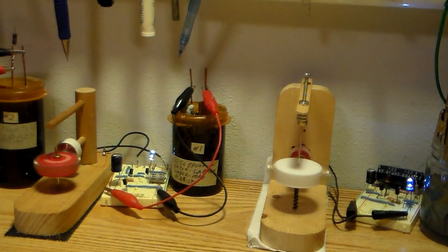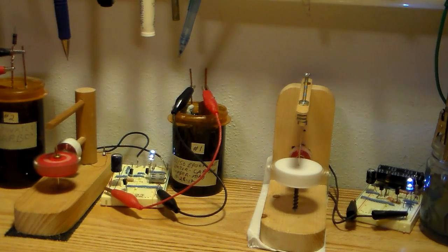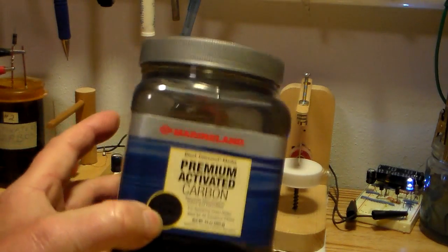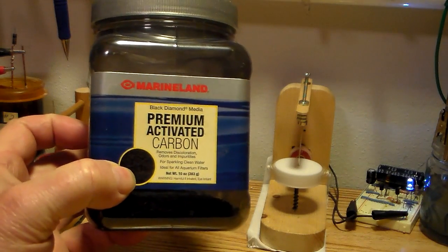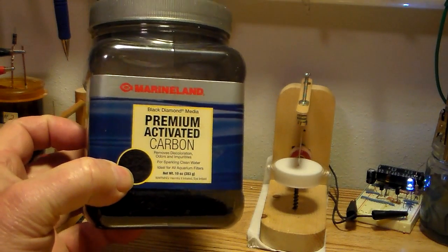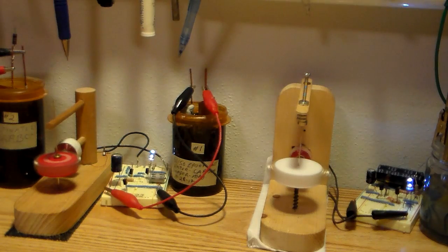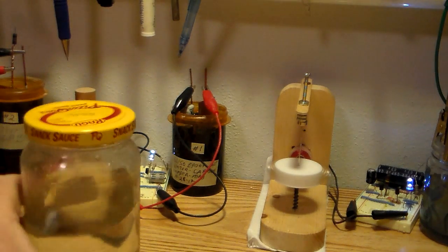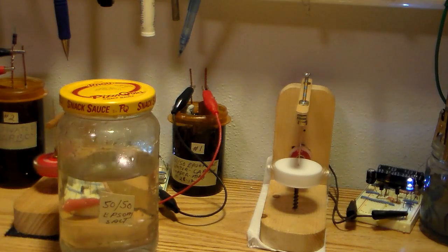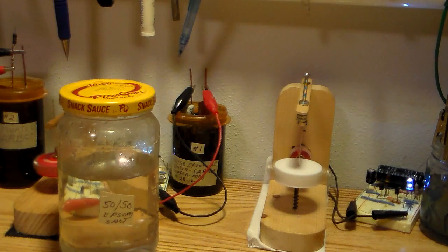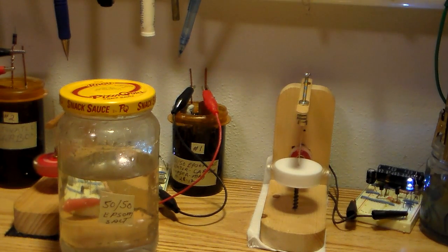Anyway, all it consists of—I stuck them in there and the first thing I did is I filled them up with this stuff. This is nothing but aquarium filter material carbon, activated carbon. And I mixed up 50/50 Epsom salt and distilled water, I let it dissolve the Epsom salt completely.